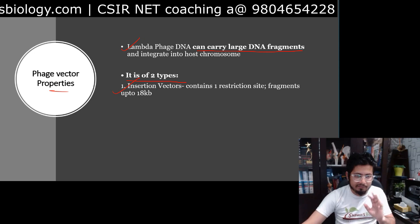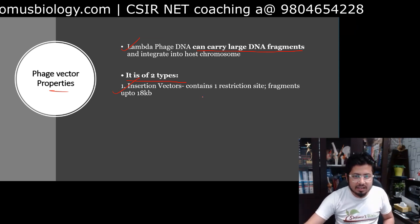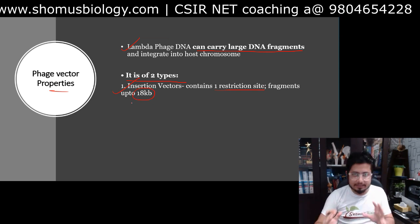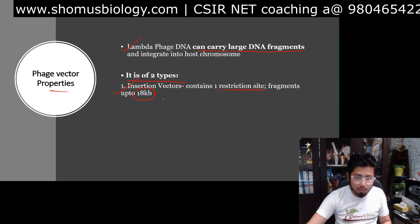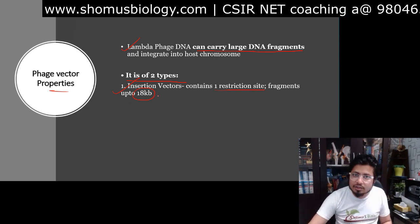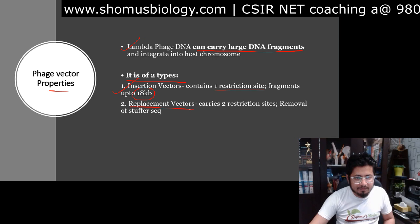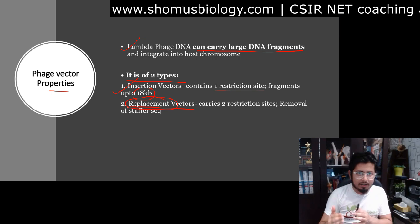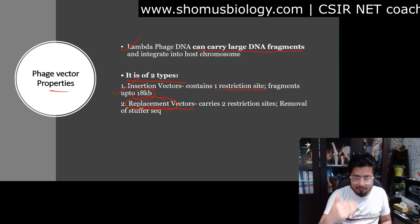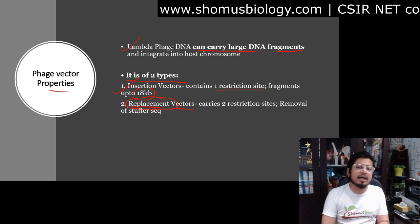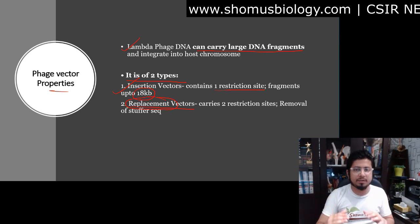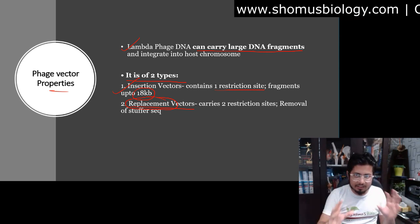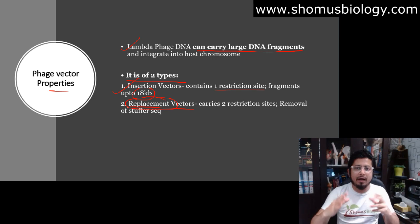The insertion vector contains one restriction site and fragments up to 18 kilobases long can be cloned using it. The replacement vector — and you can understand why the term 'replacement' is used — has different sections of the gene responsible for making the head region, tail region, and different components of the phage. There are sections of the phage which are not needed to spread and transfer the target gene inside the host.